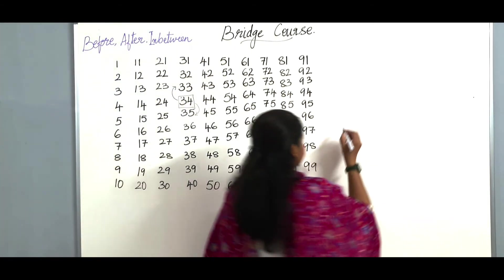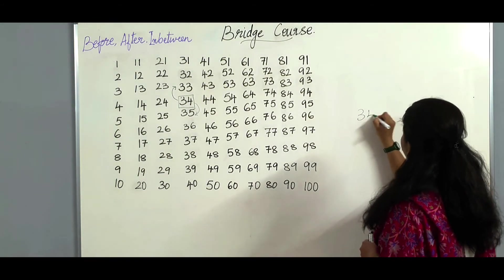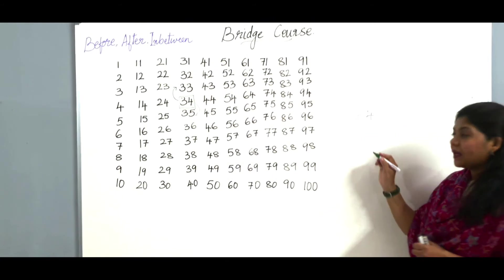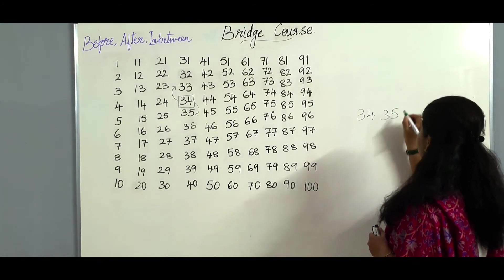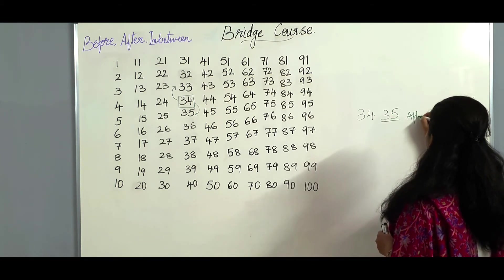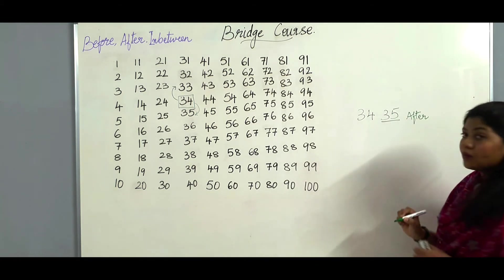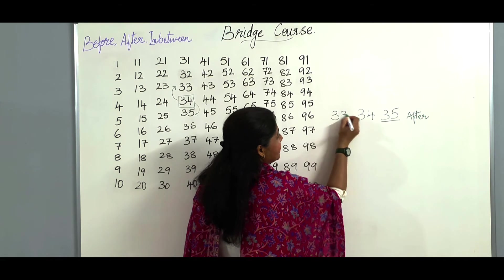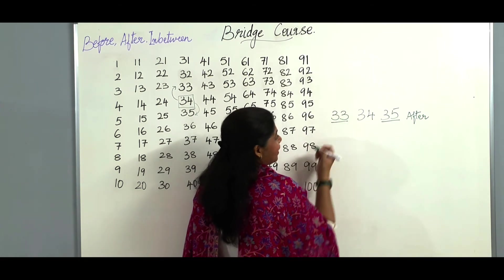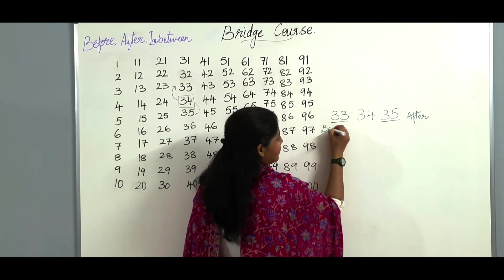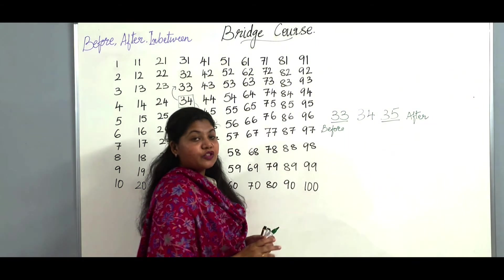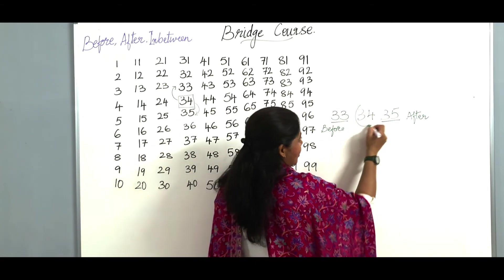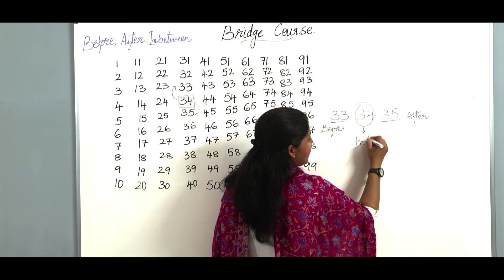Let me show you here. If you add 1 to 34 it becomes 35, so 35 is the after number. The number before 34 is 33, which becomes the before number. And the number which falls in between these two numbers is called the in-between number.